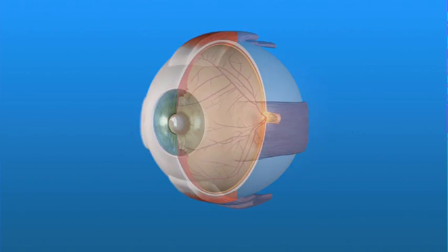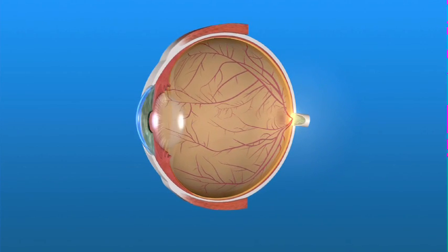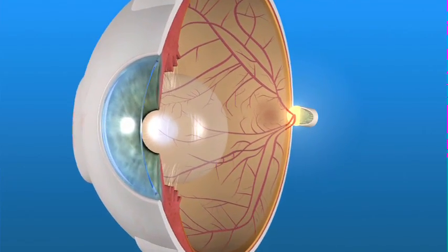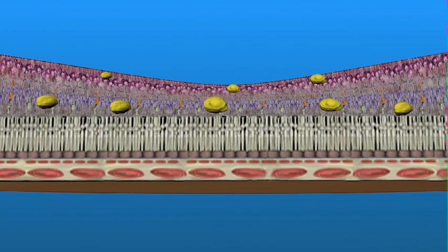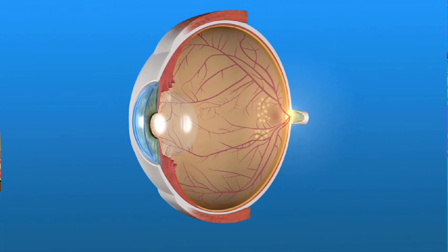Let's take a closer look at NPDR and how it affects your vision. With non-proliferative diabetic retinopathy, or NPDR, damaged blood vessels in the retina begin to leak fluids, including small amounts of blood, into the retina. Sometimes deposits of fats may leak inside the retina. These deposits are called hard exudates. Many people with diabetes can have a mild form of NPDR that doesn't affect their vision. Problems can occur, however, if the disease progresses with conditions called macular edema and macular ischemia.